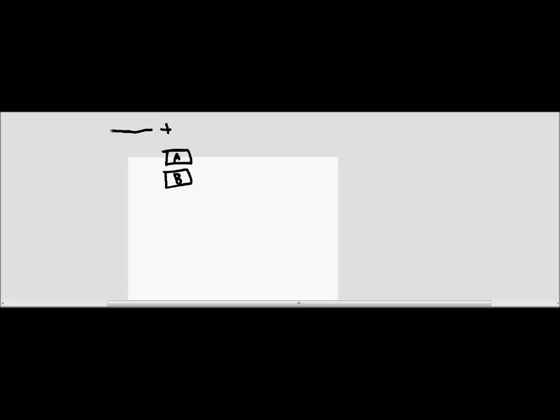For question number seven, we're given two cars that are moving westward along a straight highway. We've got car A and car B, and they're traveling westward, so we'll say that the positive direction is that way. Car A is moving at a constant velocity of 85 kilometers per hour, and car B is going at a velocity of 115 kilometers per hour. First, they want us to find how much sooner the faster car, car B, arrives at a destination 16 kilometers away.